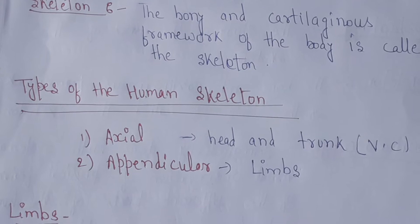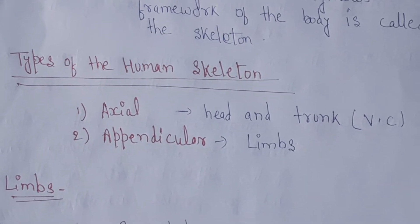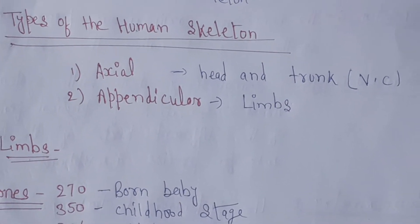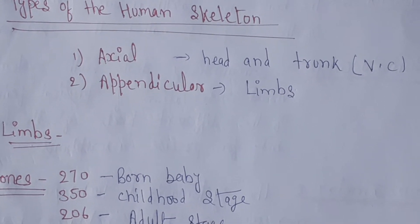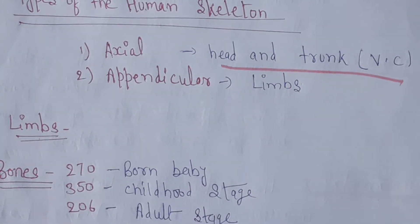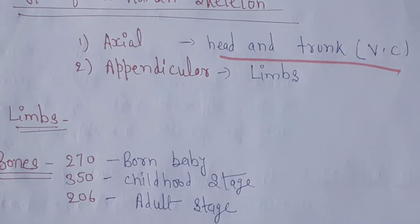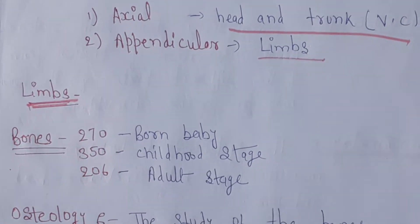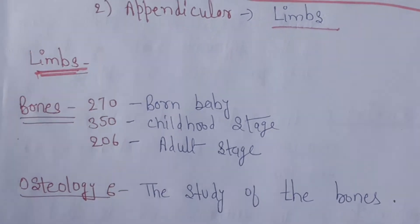How many types does the human skeleton have? There are two major types: axial and appendicular. In the axial skeleton, we have the head and trunk — the skull area and the vertebral column. In the appendicular skeleton, we have the limbs, meaning the hands and legs.